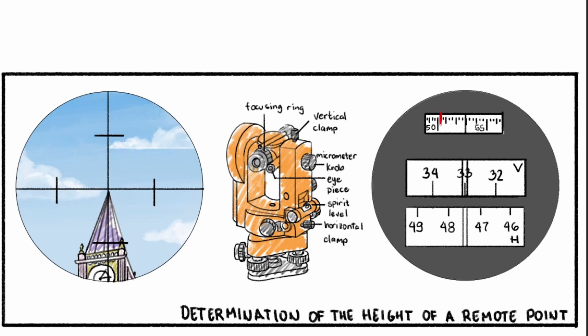Each minute is then divided into 20-second sections. So, this is 50 minutes and 20 seconds, 50 minutes and 40 seconds, and then your 51 minutes. Taking all of that into account, we can determine that the reading on this scale is 33 degrees and 53 minutes.